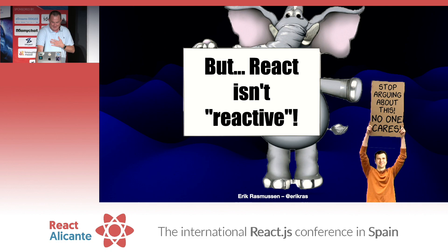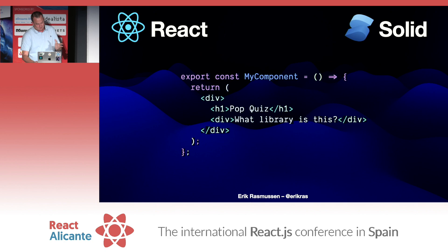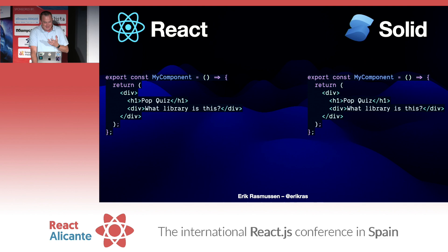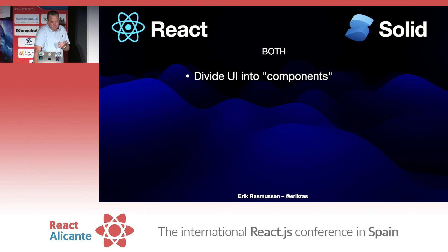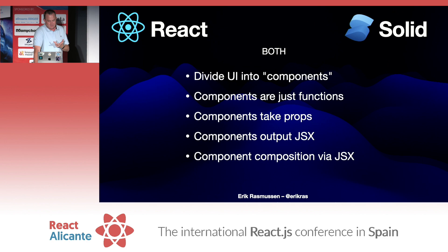To start off, we're going to have a little pop quiz: is this a React component or a Solid component? Trick question — we don't really know. It's both. That's how similar the syntax is. Both React and Solid divide UI into components. Components are just functions. Components take props. Components output JSX. And you can compose components together via JSX.